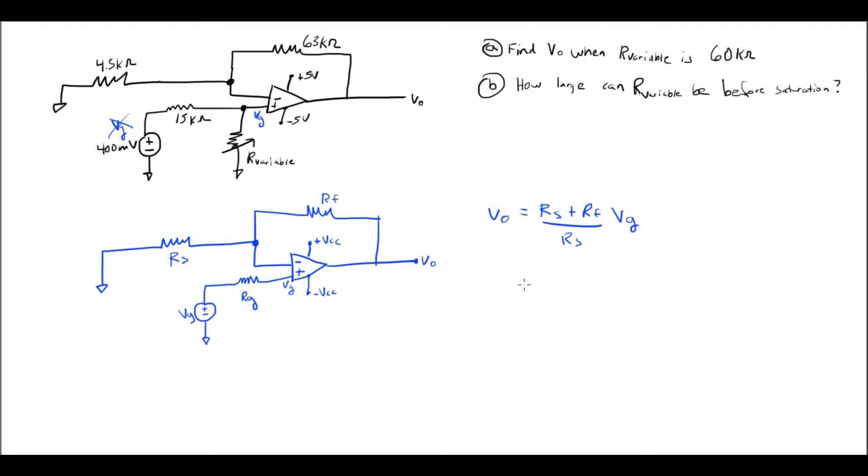So using my voltage divider formula, I can go ahead and see that VG is going to be equal to R2. In this case, RVAR, I'll call it for short for the potentiometer, over the sum of RVAR plus 15k. All of that times 0.4 volts, same thing as 400 millivolts, and that's going to give me a VG value of 0.32 volts.